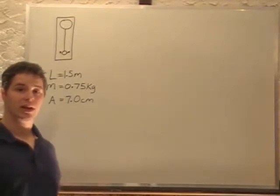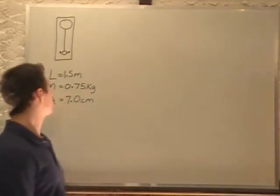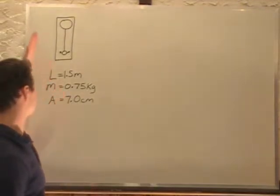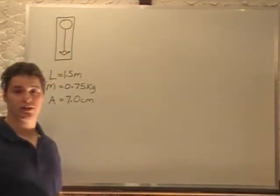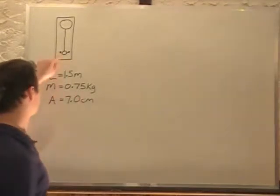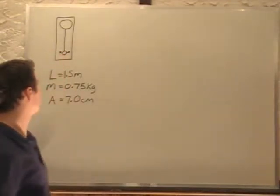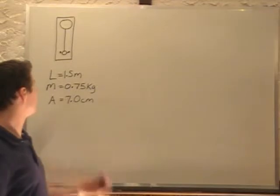Now we're asked to find the energy of the pendulum. So what we're going to do is assume, or take a point at the bottom, and assume it's all kinetic energy at that point. So we'll call that zero potential energy there, and figure out the kinetic energy.